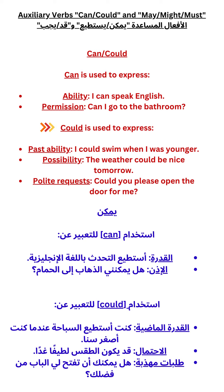Could is used to express past ability — for example, 'I could swim when I was younger.' It also expresses possibility — 'The weather could be nice tomorrow.' And it is used for polite requests — 'Could you please open the door for me?'